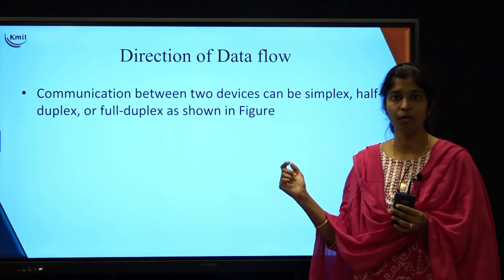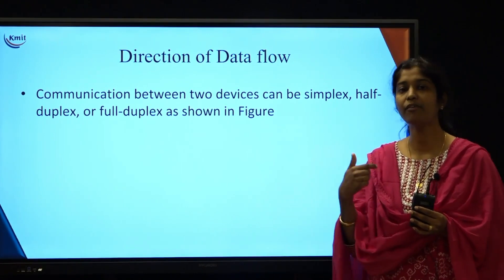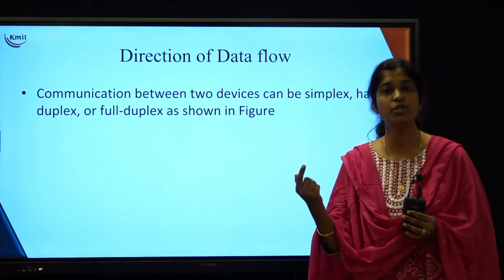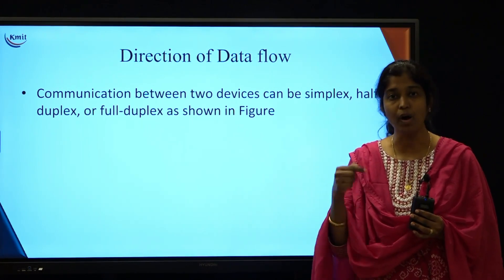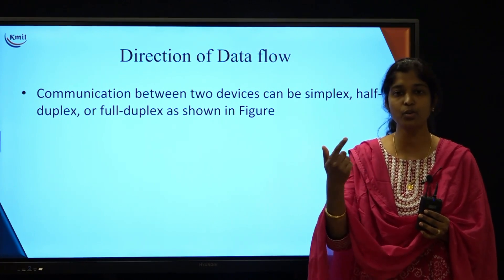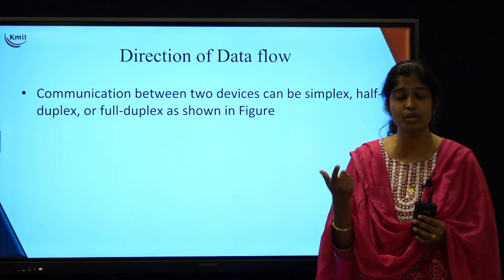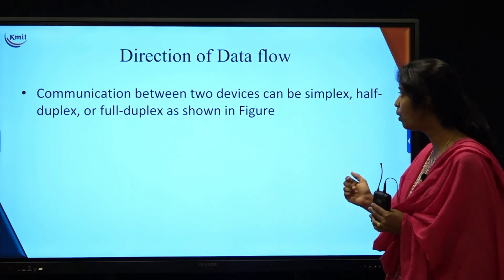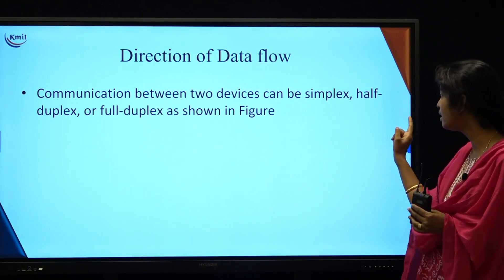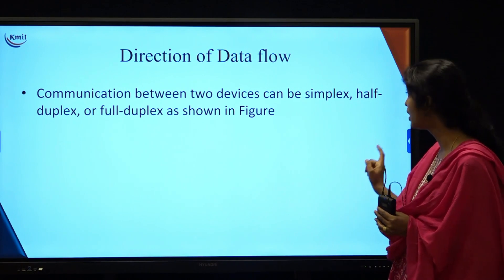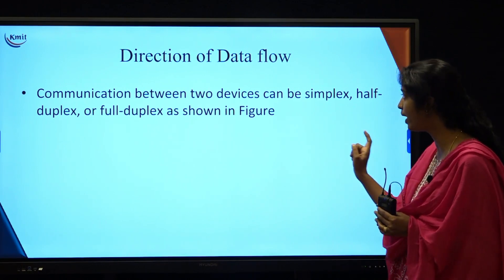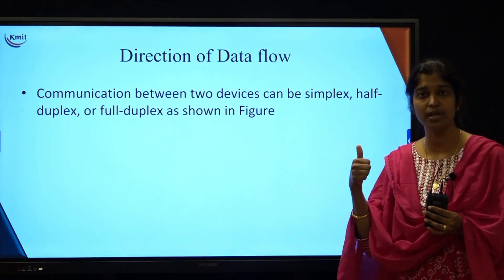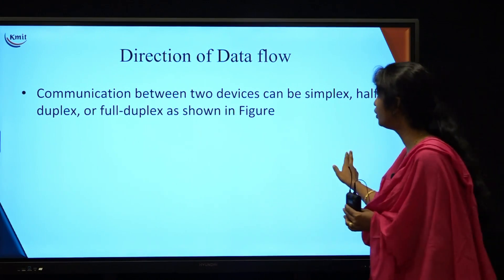The next topic of this video is direction of data flow. Now that we understand what a data communication system means and its components, we should also be aware of how data flows between two devices. Which device is sending and which is receiving? Communication between two devices can be specified using either simplex, half duplex, or full duplex — there are three directions of data flow.